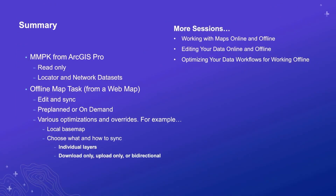In summary, there are two main ways to bring data offline for your runtime apps. The first is to generate a mobile map package (MMPK) single file from ArcGIS Pro. The other is to leverage a web map and use the offline map task. They both have specific use cases: MMPKs are read-only, while the offline map task allows you to edit and sync, with preplanned or on-demand approaches depending on your data, how frequently it's updated, and the scalability you need. There are also various optimizations and overrides, including configuring each individual layer for a specific sync direction.